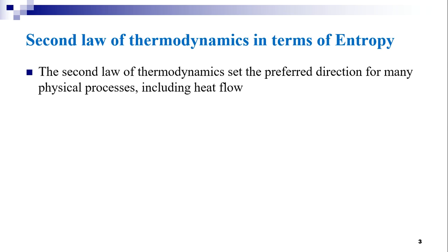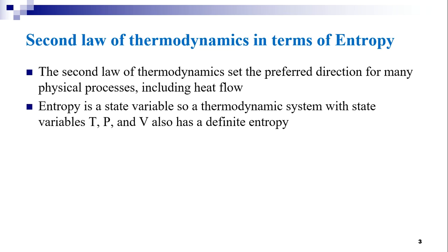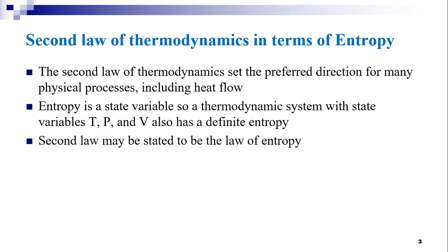The second law of thermodynamics sets the preferred direction for many physical processes, including heat flow. Since entropy is a state variable, a thermodynamic system with state variables temperature, pressure, and volume also has a definite entropy. The state variable entropy cannot be measured directly, but the change in entropy can be measured.